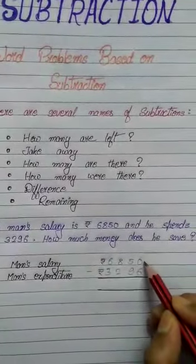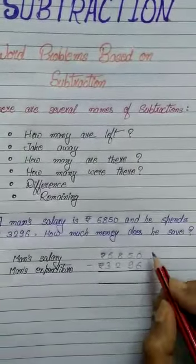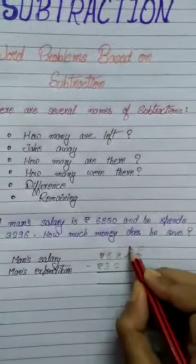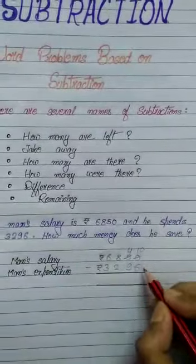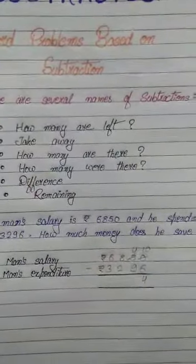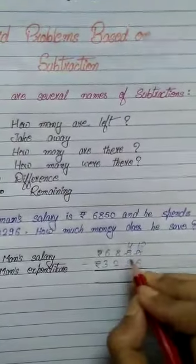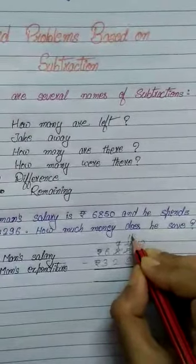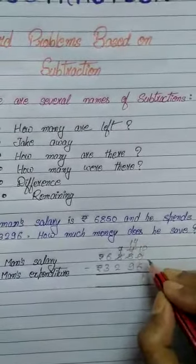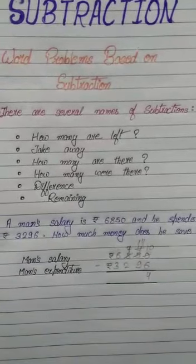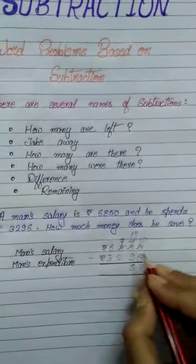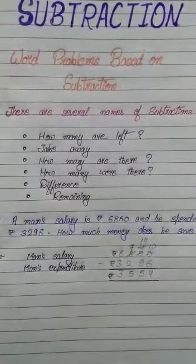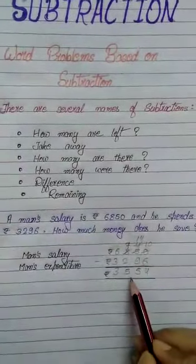Now subtract. 0 minus 6 is not possible, so we borrow from 5. This 0 becomes 10 and this 5 becomes 4. 10 minus 6 equals 4. Now 4 minus 9 is not possible, so we borrow from 8. This 8 becomes 7 and this 4 becomes 14. 14 minus 9 equals 5. 7 minus 2 equals 5. 6 minus 3 equals 3. So the answer is 3,554.